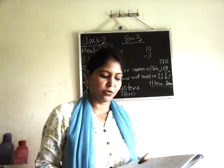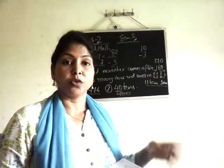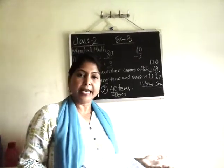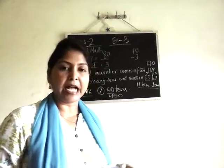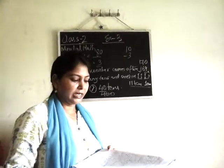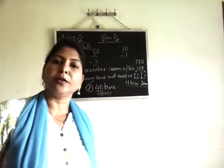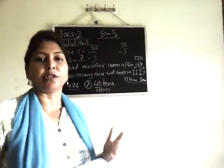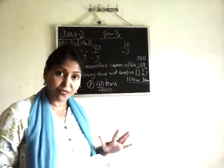Question number 6: 27 plus 3. Just add 3 more to 27 and you will get the answer 30. Then question number 7: 9 minus 4. Either you can do backward counting or simple subtraction. 9 minus 4 is 5.